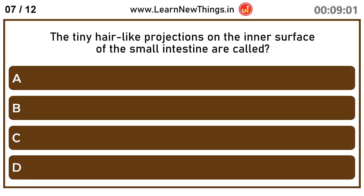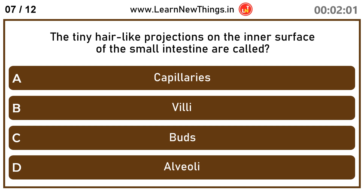The tiny hair-like projections on the inner surface of the small intestine are called villi.